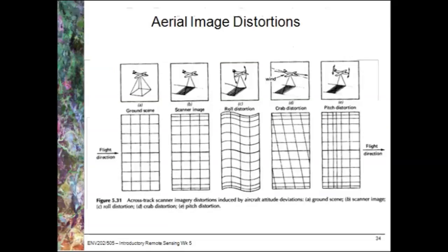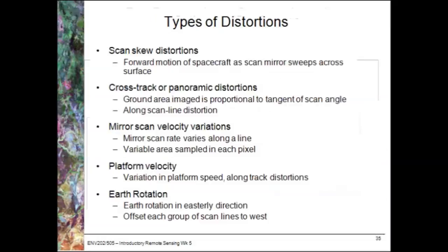Here are some examples of aerial image distortions. Bear in mind that some of these distortions will differ from satellite-based platforms due to the greater stability of a satellite compared with an aircraft. A number of different types of distortions are listed here for reference, but we won't go into too much detail for each of those.